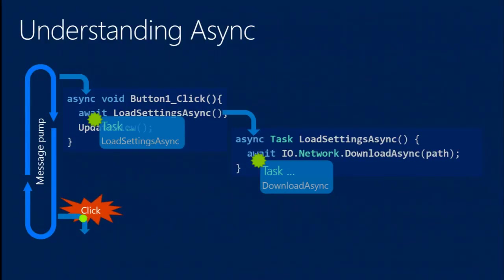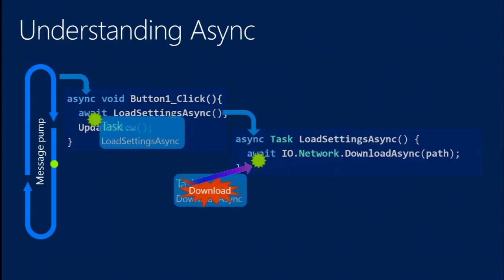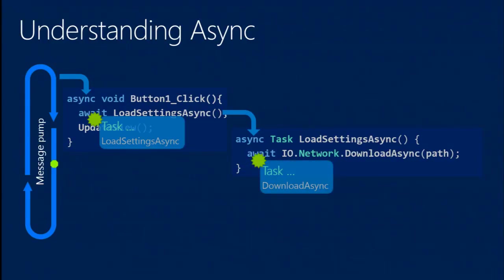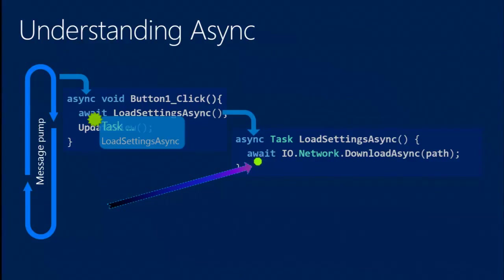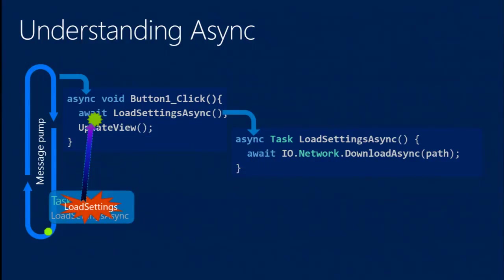When we return back to button-one-click and it awaits the load-settings-async task, button-one-click also returns. Button-one-click was called by the message pump, so we go back there and can process other messages. We've kicked off the download and immediately returned all the way back to where we started — and that's what keeps the UI flowing. We can handle other clicks because the UI is responsive.